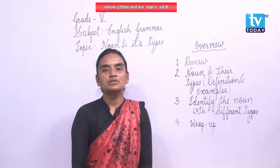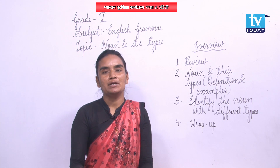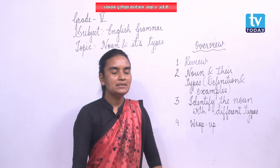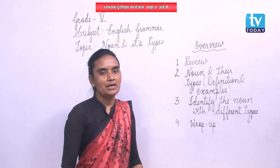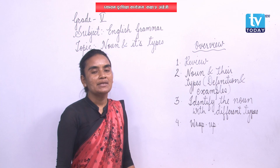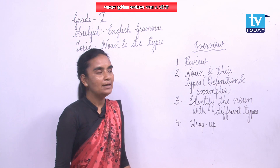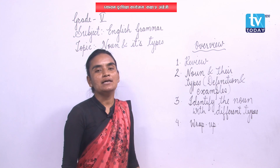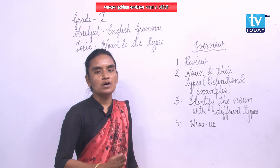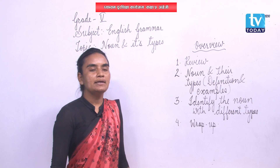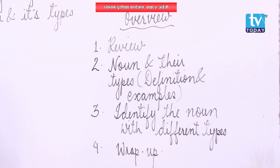Before going to the different activities of today's class, I just want to give an overview of today's session. Please check the board. First, we have a review exercise from last week's class. After that, we will deal with noun and its types — definitions and examples with different words and sentences. Then we have an activity: identifying nouns with different types as the evaluation part.